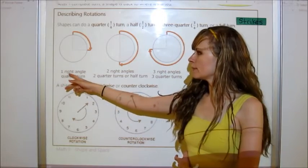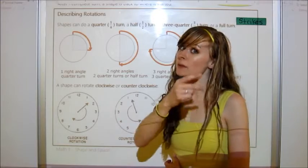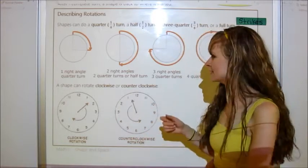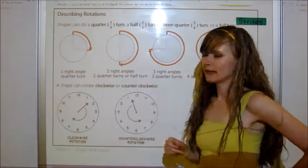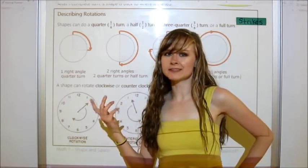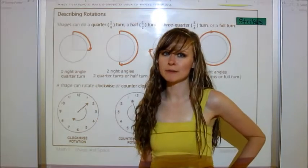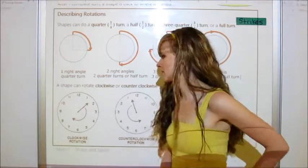So just so you remember, a quarter turn is one right angle. This will help you. It might be confusing now, but just trust me. Two right angles is a half a turn. Three right angles is a three-quarter turn. And then four right angles is a full turn. But that one's just easier to remember that it's the same position as it was.